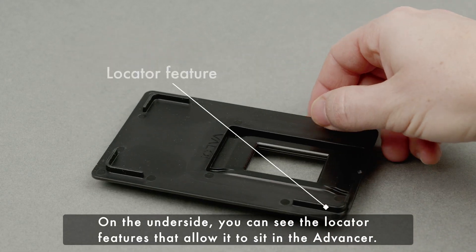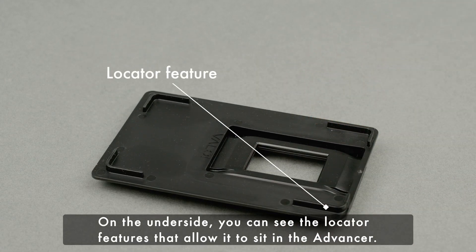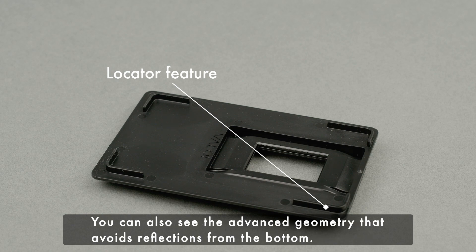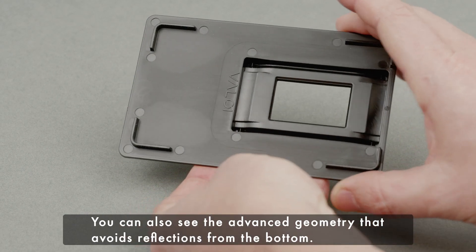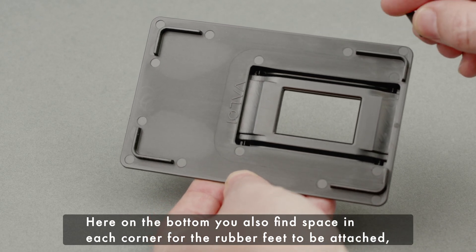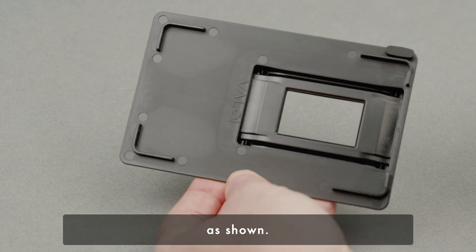On the underside, you can see the locator features that allow it to sit in the Advancer. You can also see the advanced geometry that avoids reflections from the bottom. Here on the bottom, you also find space in each corner for the rubber feet to be attached, as shown.